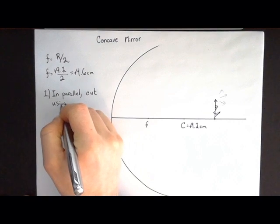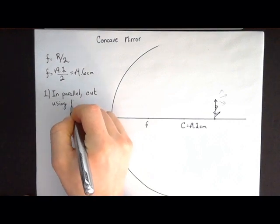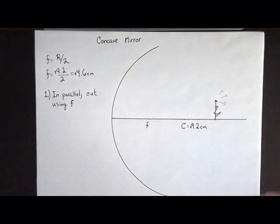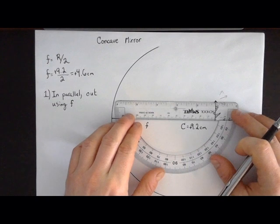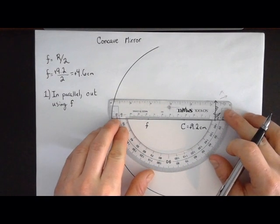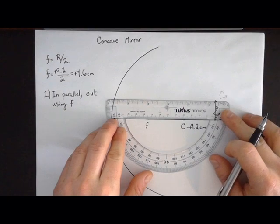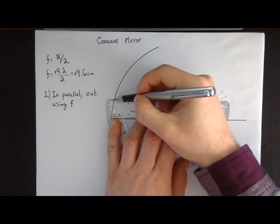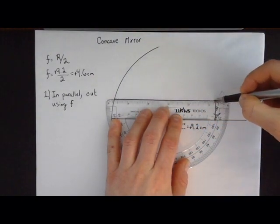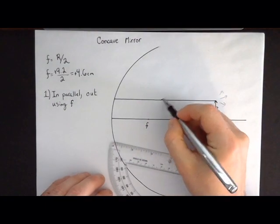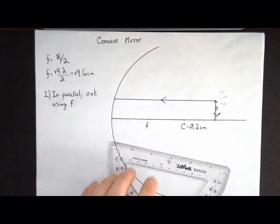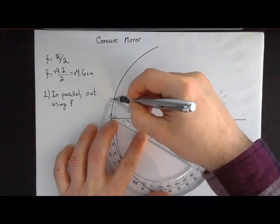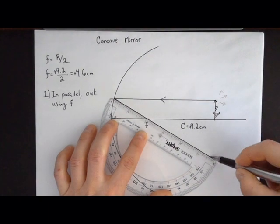Out using the focal point. So that's your first ray. We're going to draw our first ray coming in parallel. You can see why I've made my object the exact same thickness as my protractor, because it makes drawing a parallel ray pretty easy. So it's going to come in parallel like that, and it's going to then go out through my focal point, just like so.